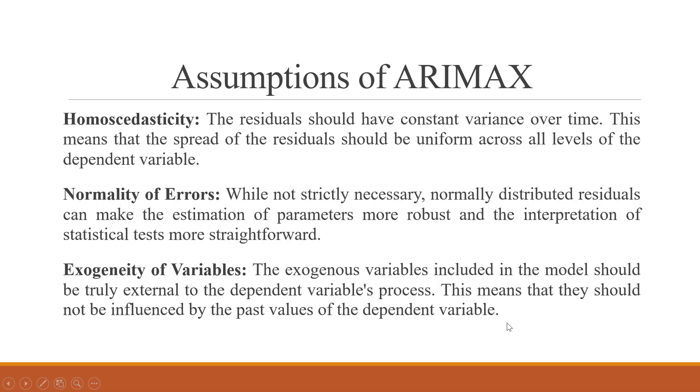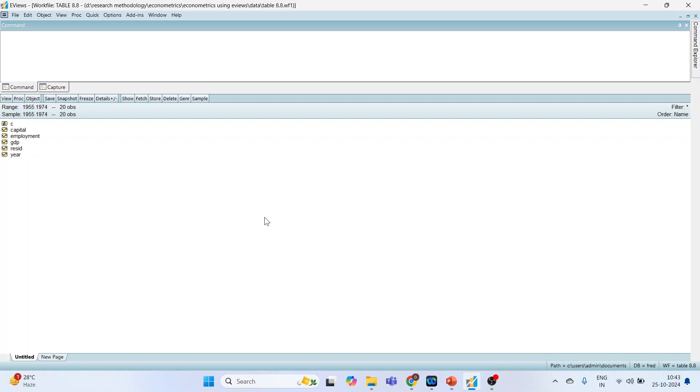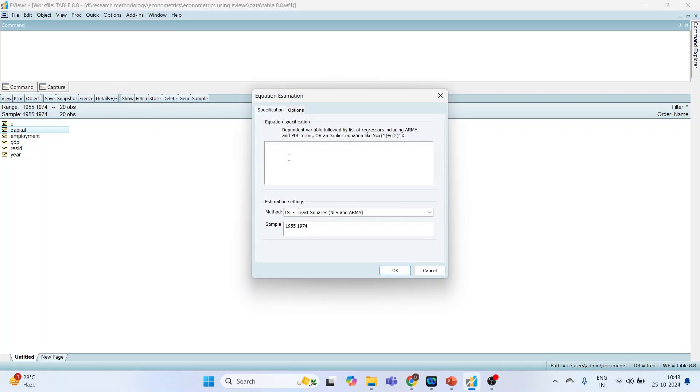Now let's see how we can do this in eViews. So we are having data from 1955 to 1974. The variables are GDP, employment, and capital. Now we will go in quick, estimate equation. We will write here GDP as a dependent variable. Then C, constant.